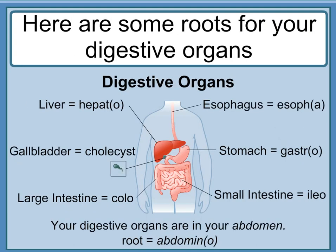Here are some roots for your digestive organs. Liver is 'hepat-' or 'hepato-'. Gallbladder is 'cholecyst-'. Esophagus is 'esoph-' or 'esophag-'. Large intestine is 'col-' or 'colo-'. Stomach is 'gastr-' or 'gastro-'. Small intestine is 'ile-' or 'ileo-'. Your digestive organs are in your abdomen — the root is 'abdomin-' or 'abdomino-'.